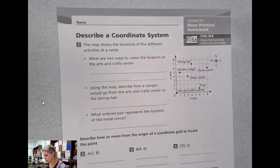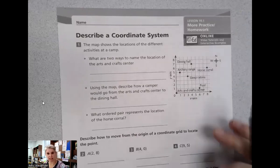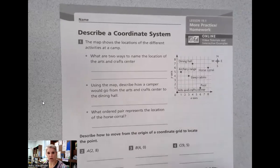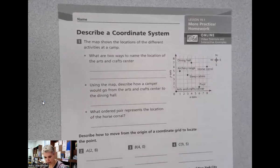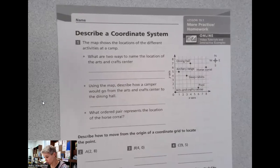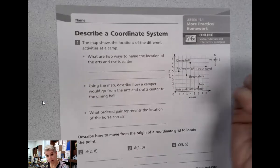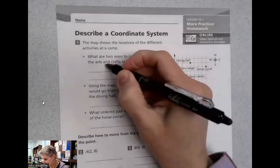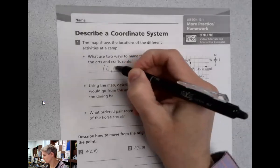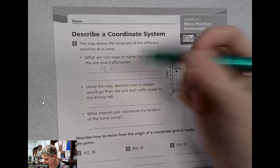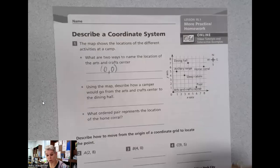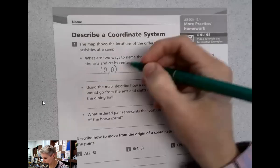So you can see pages 179 and 180. We have this map showing the locations of the different activities at the camp. What are two ways to name the location of the arts and craft center? When you look, you see the arts and craft center is right here. So we could call it the ordered pair that we talked about in class.